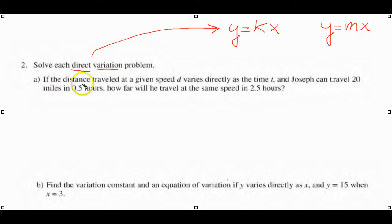Let's read it carefully. If the distance traveled at a given speed D varies directly as the time, we'll call this T, but we need to put in our K there for the constant of variation. And Joseph can travel 20 miles, that would be our distance where we put a 20 in there. We don't know what our K is, but in one half hour for time.